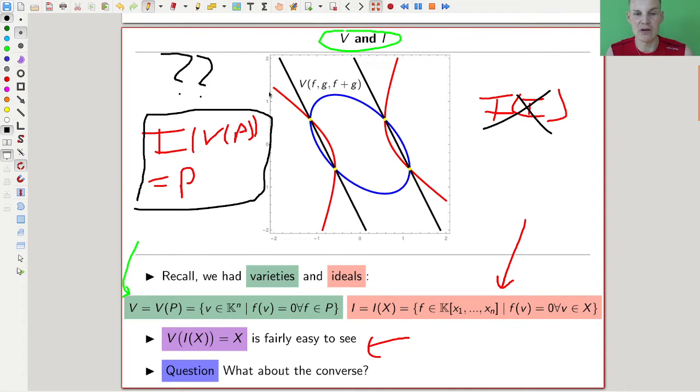P is for me always an ideal in polynomials. Anyway, this should be true somewhat in some way or form when Hilbert's Nullstellensatz will actually tell us in what sense this is wrong or in what sense this is true.